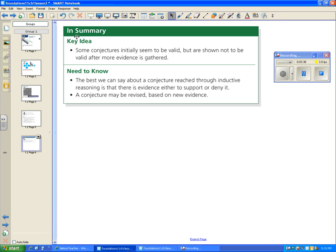So the key idea here is that some conjectures initially seem to be valid but are shown not to be valid after more evidence is gathered. The best we can say about a conjecture reached through inductive reasoning is that there is evidence either to support or to deny it.